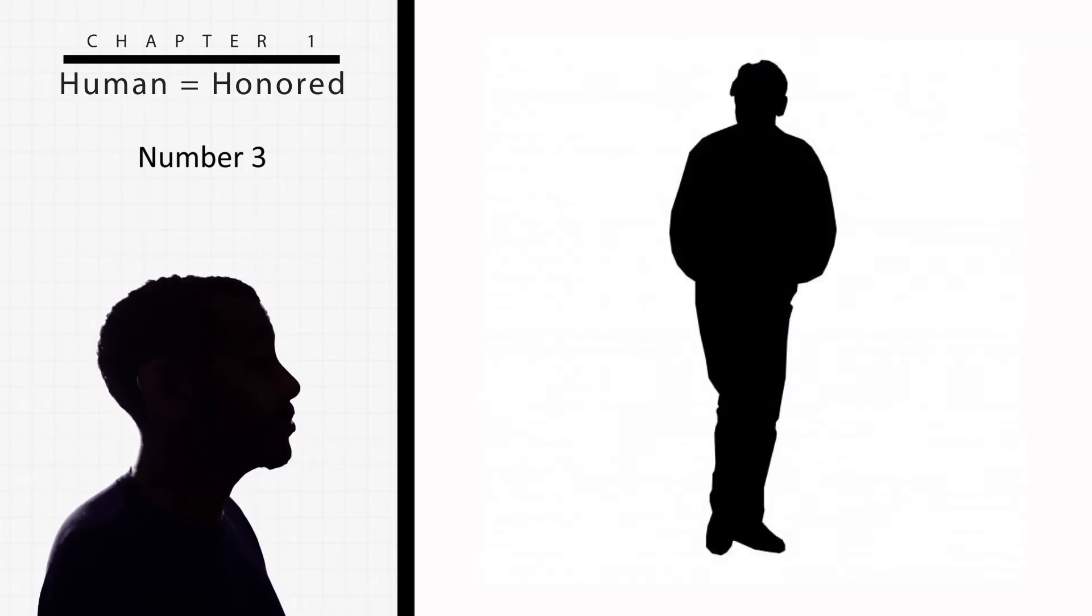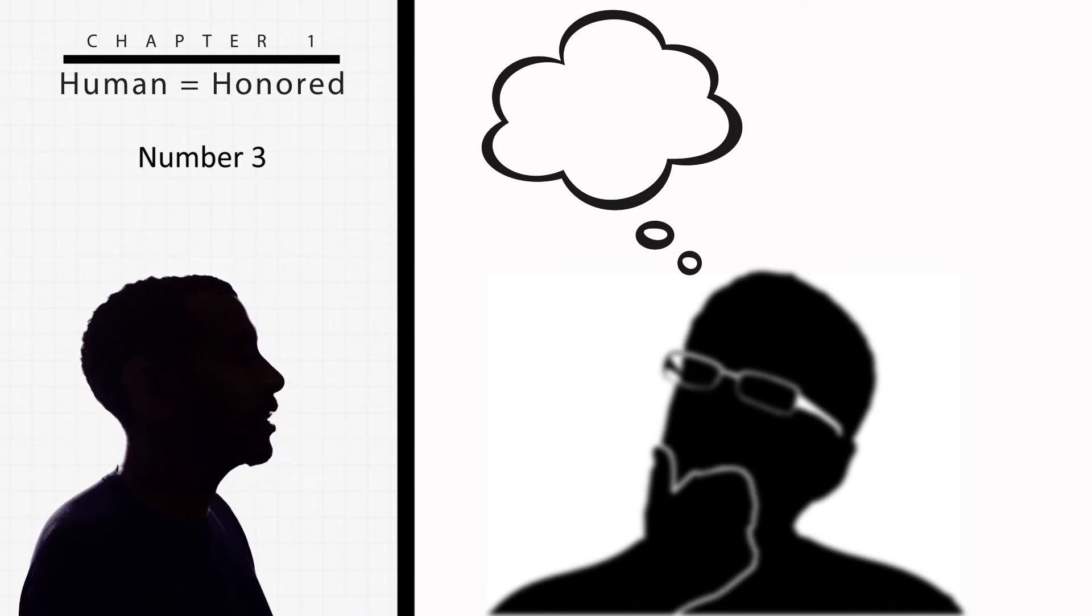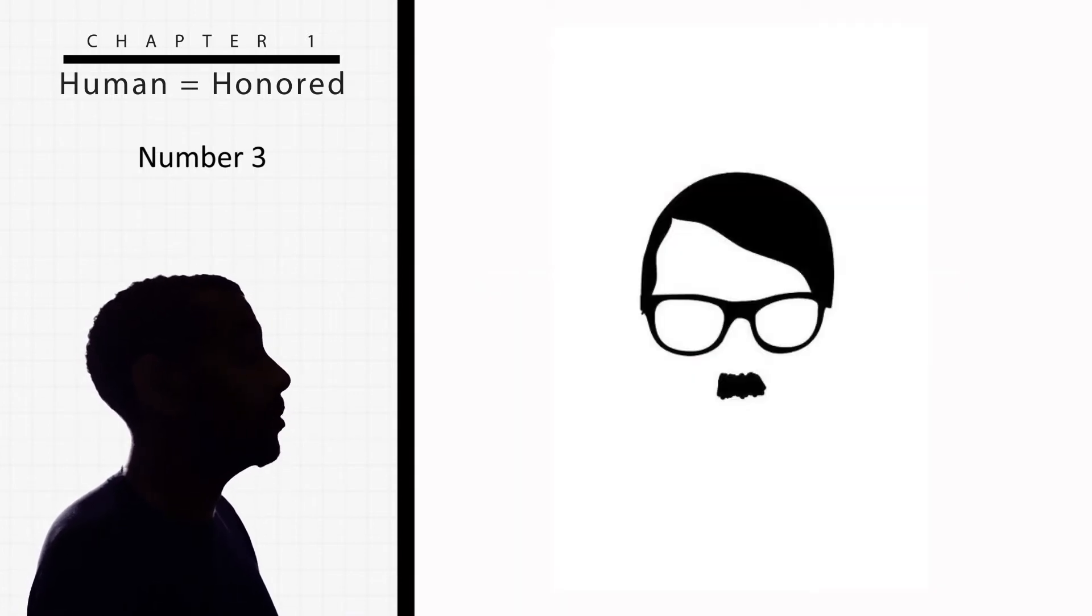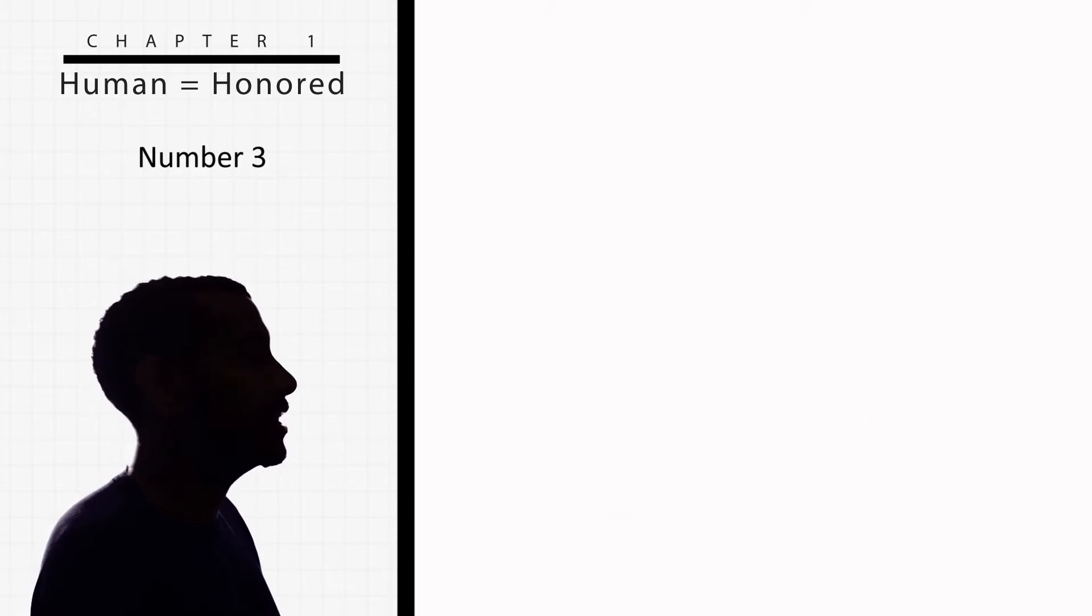I know what you're thinking: How about people like Hitler? And for that I say, how about Pharaoh? He killed children for crying out loud. But God yet still sent him not one, but two messengers: Moses and Aaron.